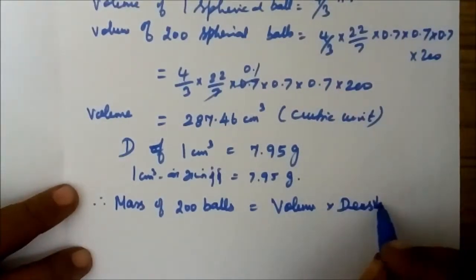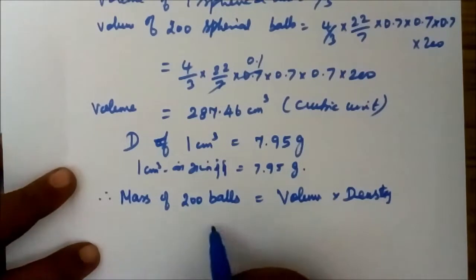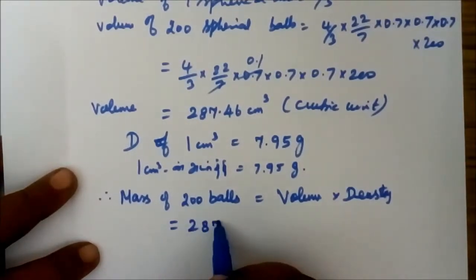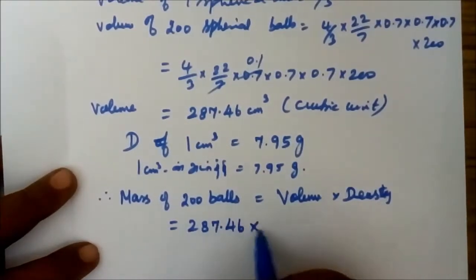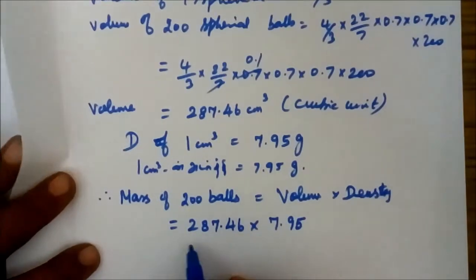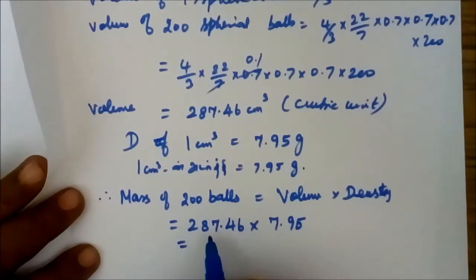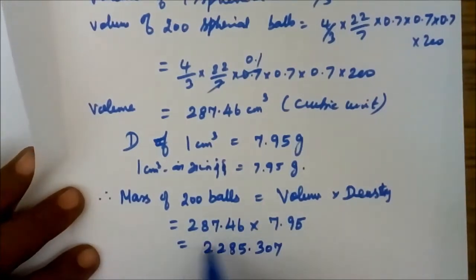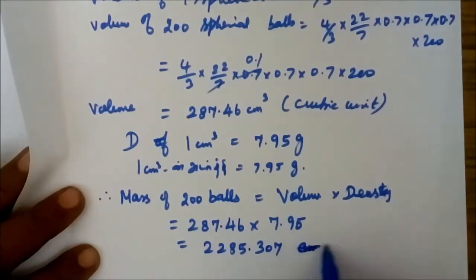This is the value of volume times density. Now, this is cm³, and this value is in grams, 2285.307 grams.